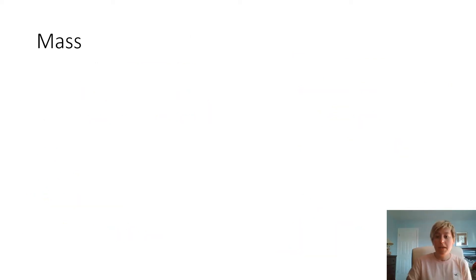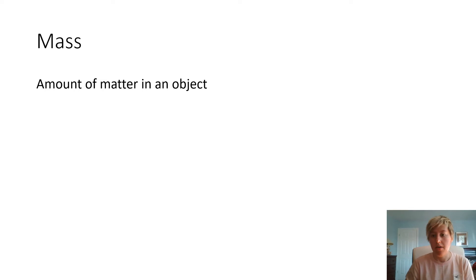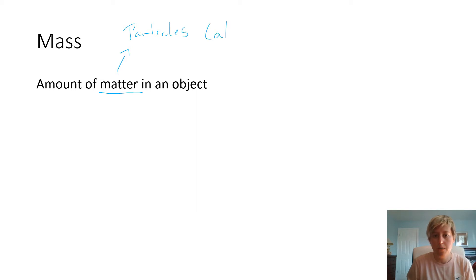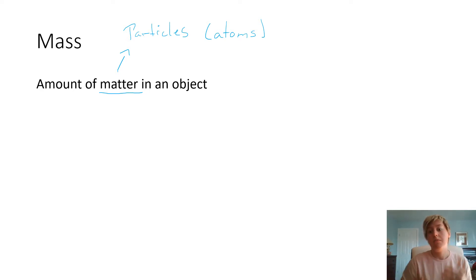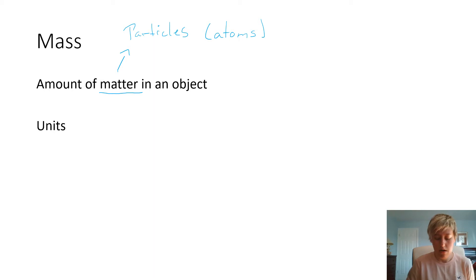Our first key non-characteristic property is mass. Mass is described as the amount of matter in an object. When we're talking about matter, we're talking about the number of particles, which we know are our atoms. If I have a high number of particles, I have a lot of atoms and therefore a high mass. If I have a low number of particles, I have fewer atoms and a low mass. Mass is measured in the unit of grams.